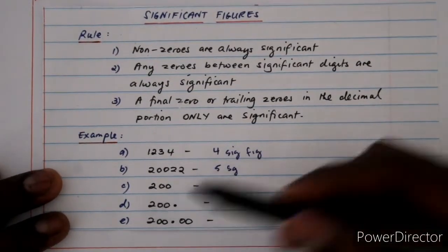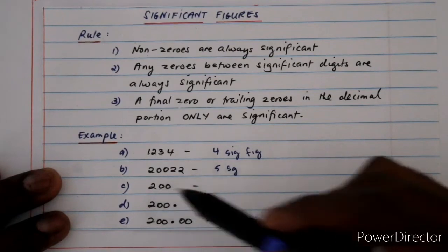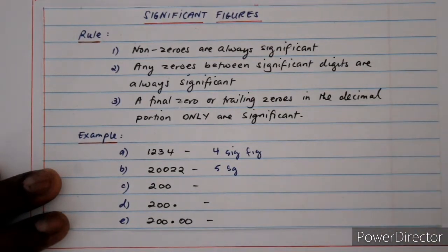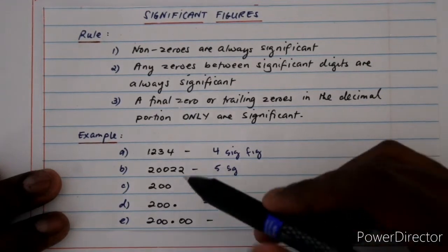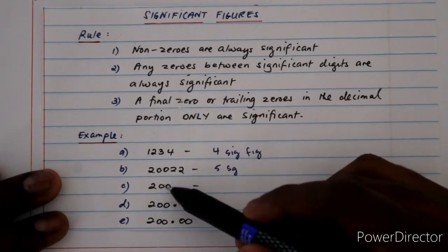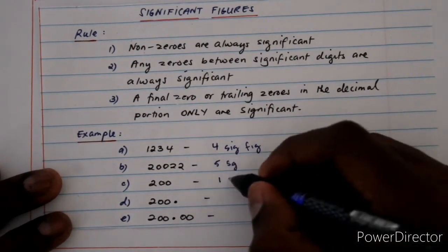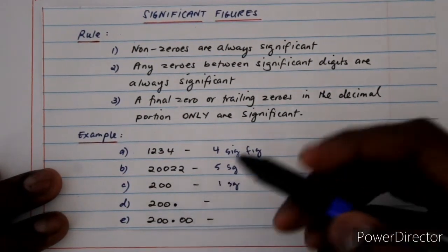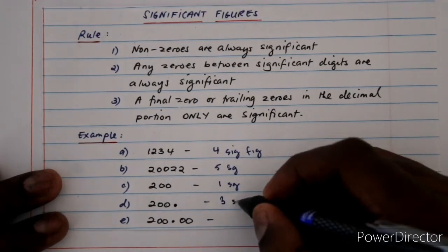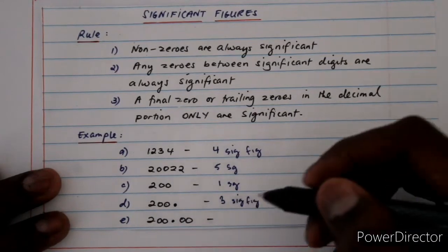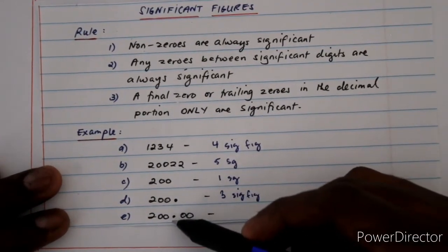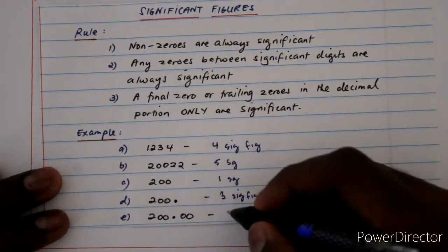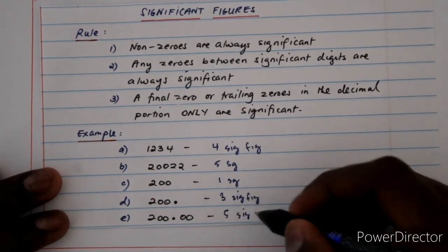Now let's look at 200, which illustrates Rule 3. Without a decimal point, the two trailing zeros are non-significant, so 200 has only one significant figure. If we write 200. (with a decimal point), the trailing zeros now fall in the decimal portion and become significant, giving three significant figures. If we write 200.00, the decimal point makes all five digits significant, so we have five significant figures.